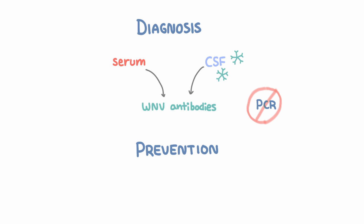Prevention of West Nile basically involves preventing mosquito bites, so it includes mosquito control, protecting ourselves from mosquito bites with DEET, protective clothing, and being indoors.